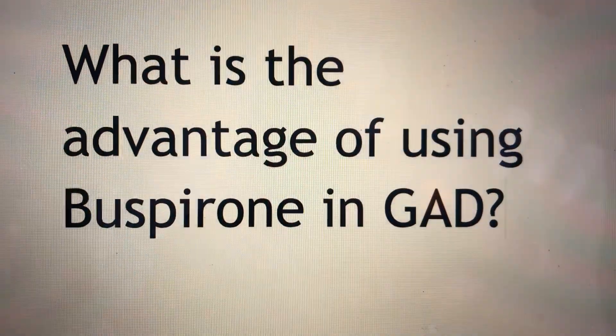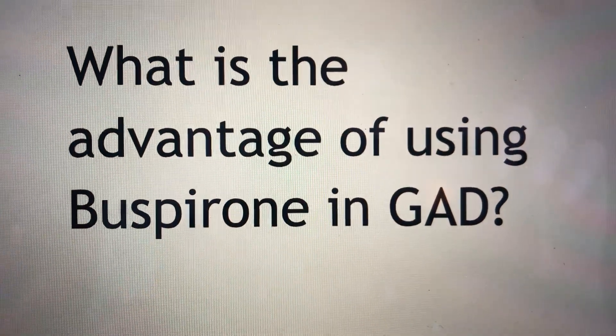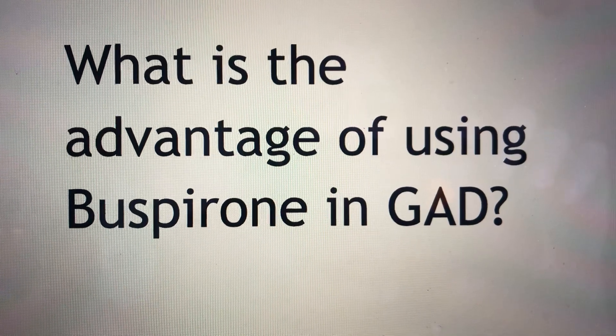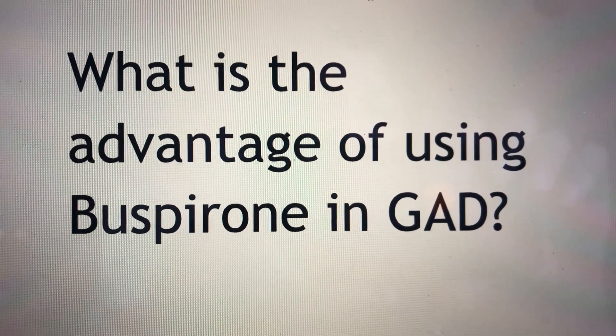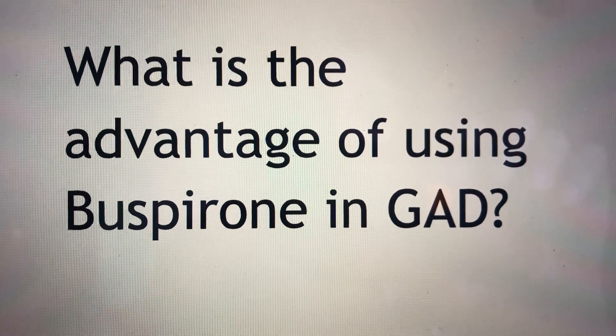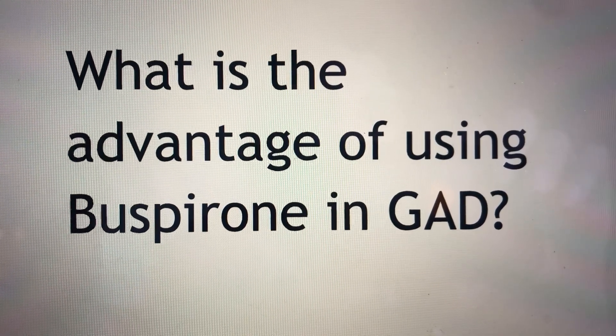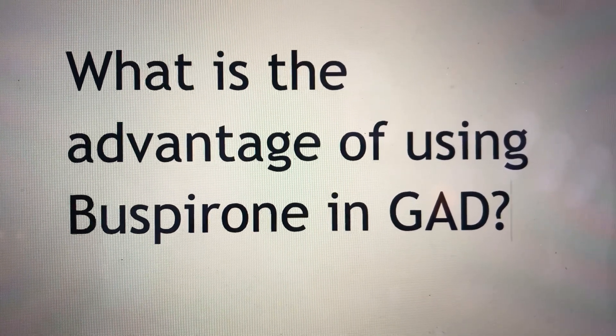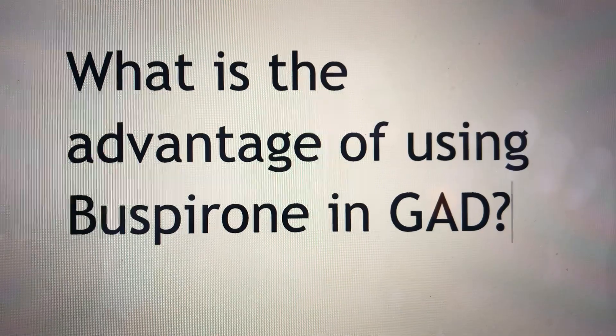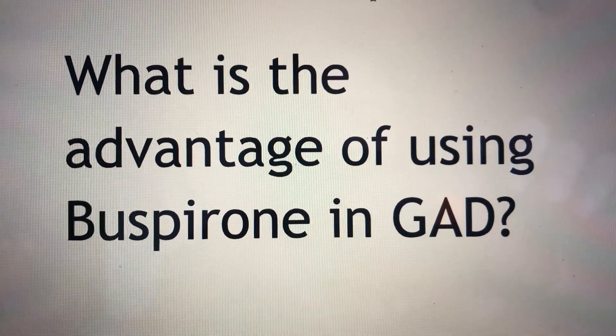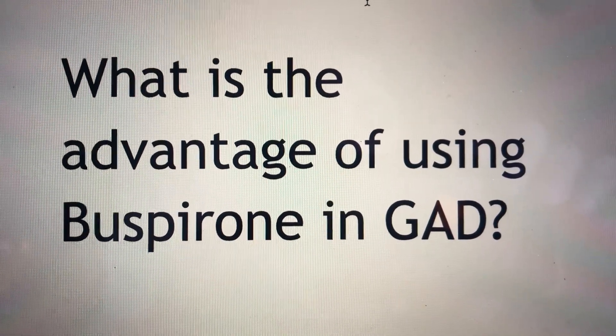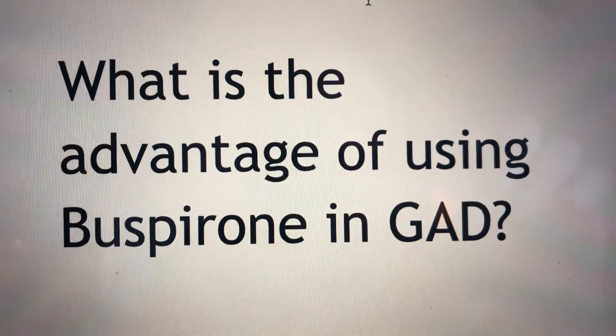However, Buspirone does not affect the GABA-A receptor, so it does not cause issues with interactions with other agents. It has no risk of dependence because it acts on the serotonin receptor. It's not really used acutely because it can take two to four weeks to start working, so we don't use it in acute settings.